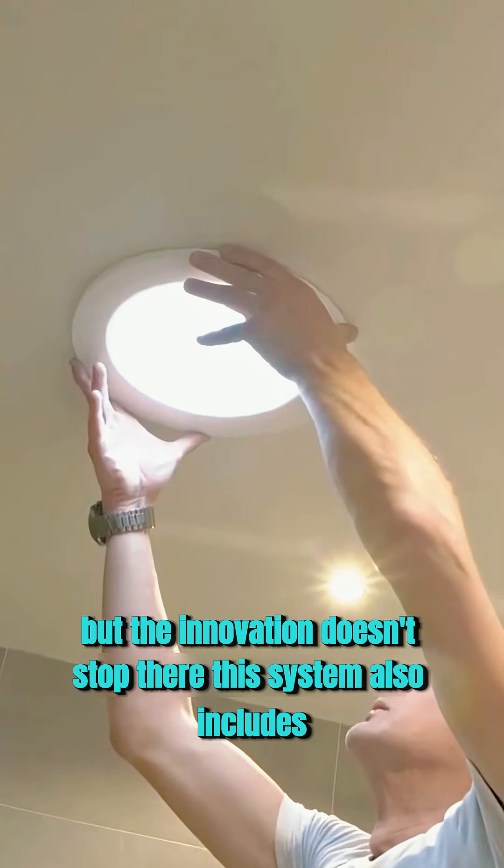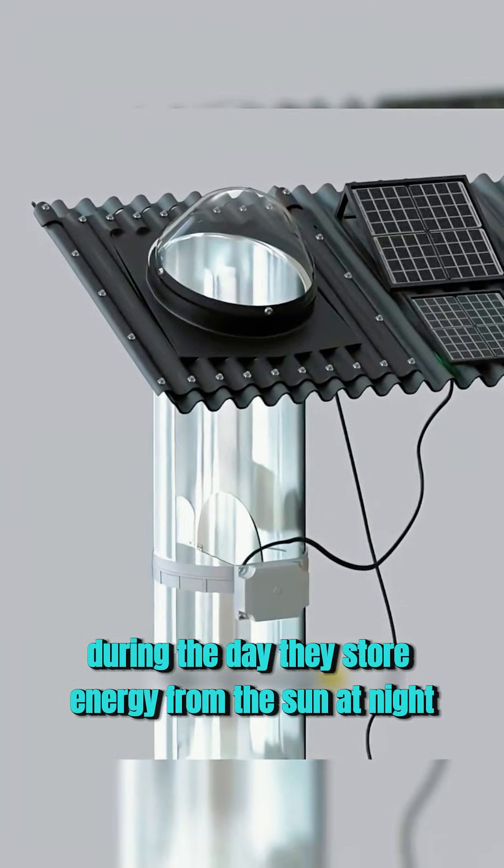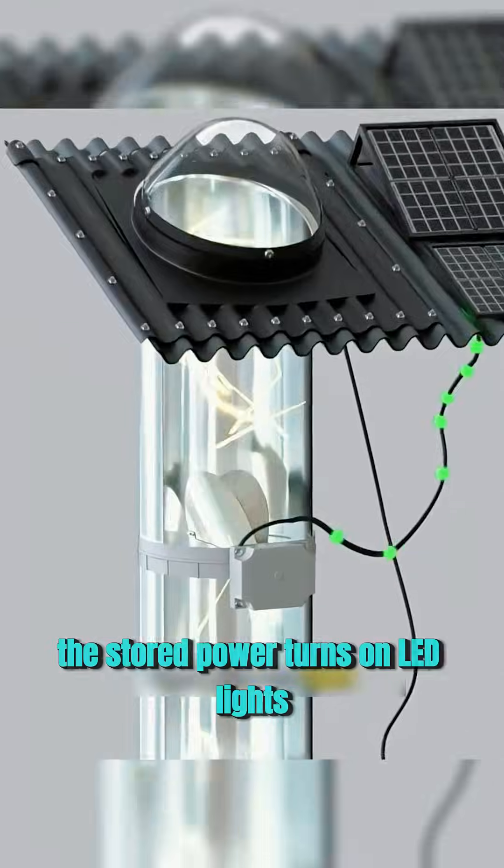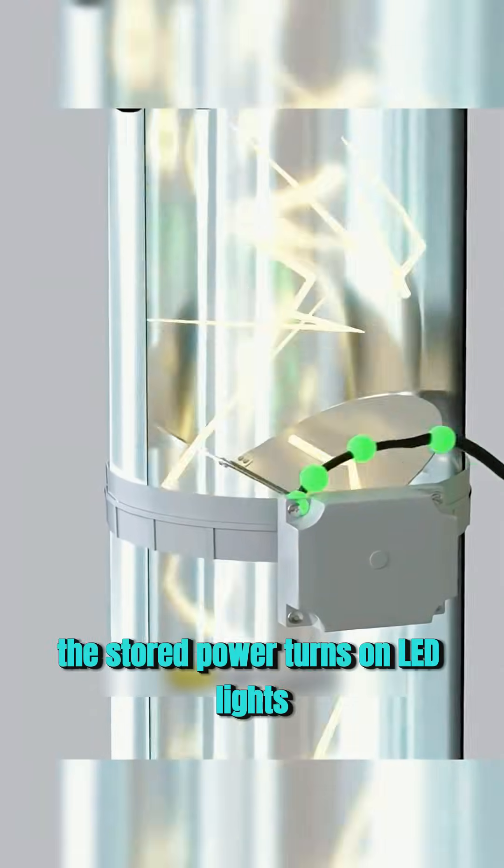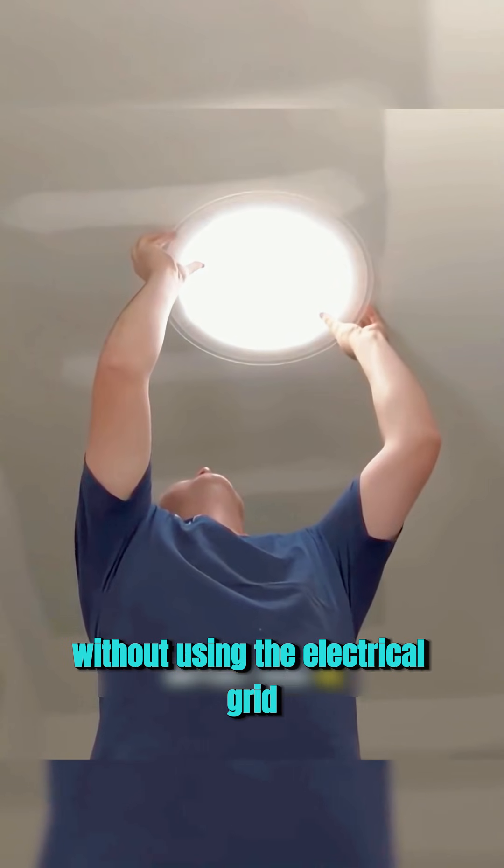But the innovation doesn't stop there. This system also includes small solar panels. During the day, they store energy from the sun. At night, the stored power turns on LED lights, giving the house 24-hour lighting without using the electrical grid.